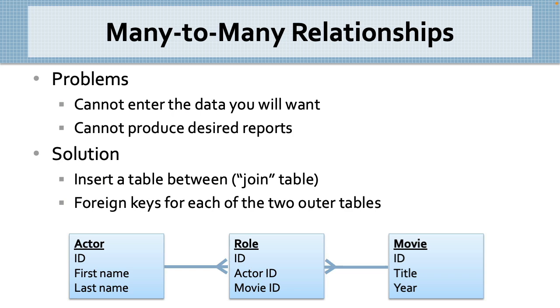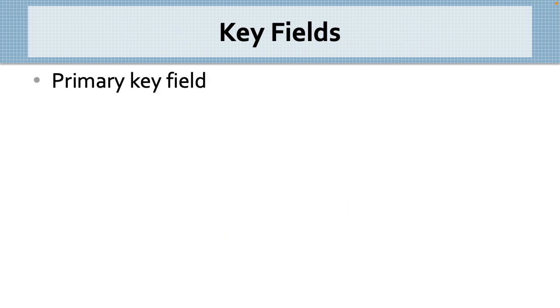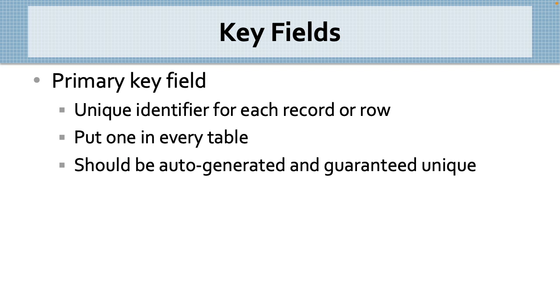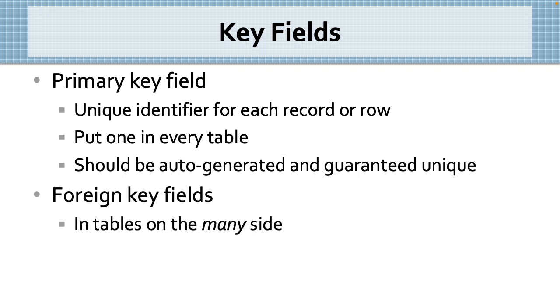I use some terms here that I want to define, primary key field and foreign key field. A primary key field is the field we create in a table for the purpose of storing a unique identifier for each record or row. You should put one in every table you create. Some database development environments create a primary key field in every table automatically. For example, Airtable, and the last two versions of FileMaker. Others, like Microsoft Access, force you to create one but don't do it for you. And still others, like MySQL, neither create one for you nor force you to create one. The values in a primary key field should not have any human meaning in them. They should simply be auto-generated and guaranteed unique. We create foreign key fields in tables on the many side of our one-to-many relationships, as you've seen in all the examples so far, to relate to the primary key field value on the other side of the relationship.